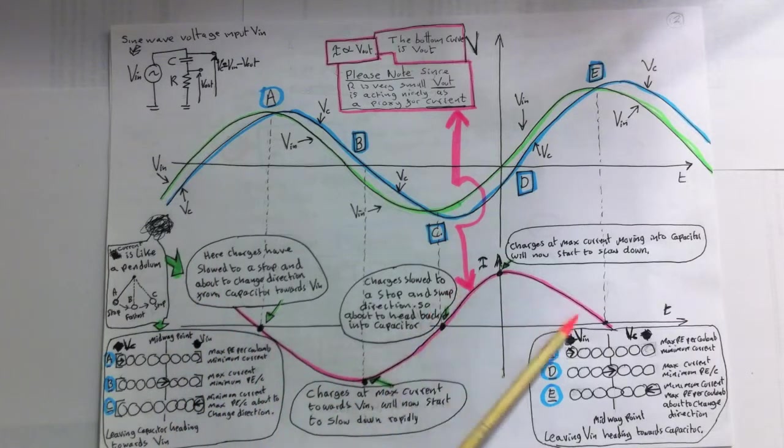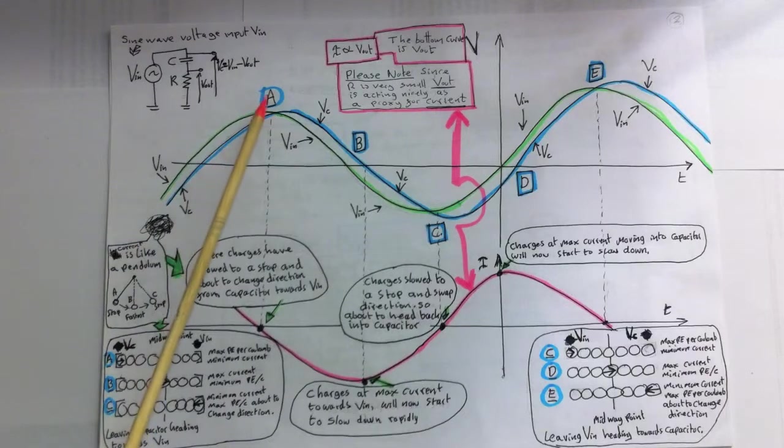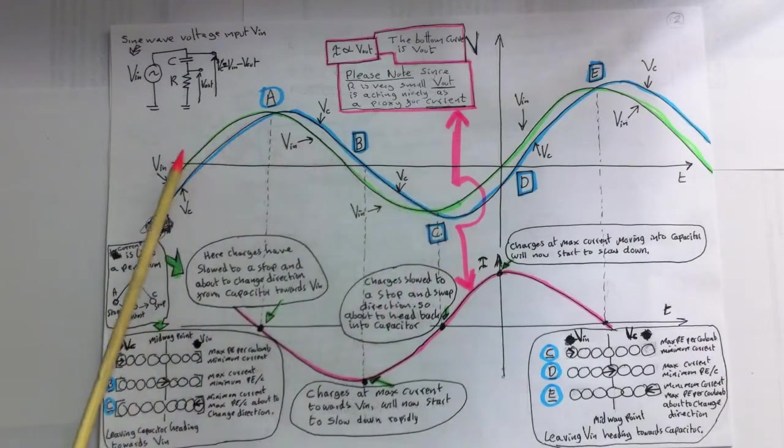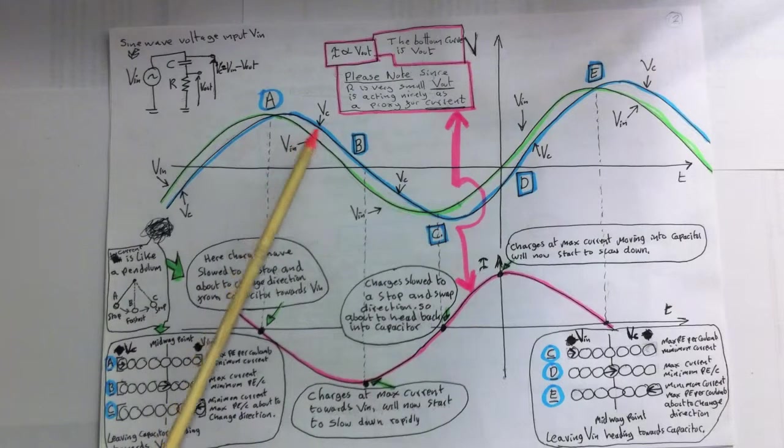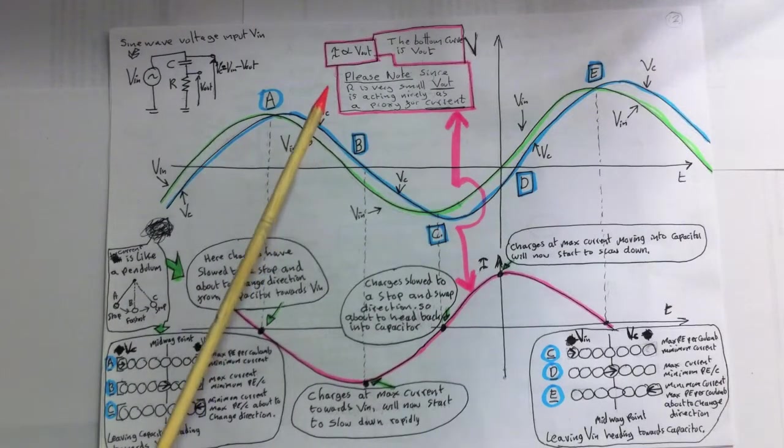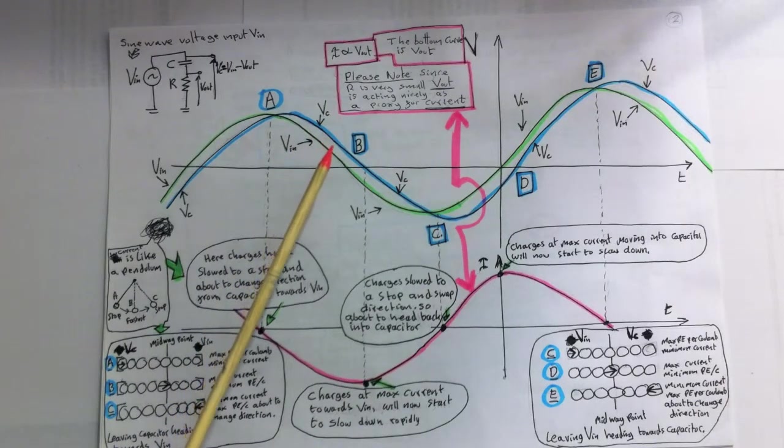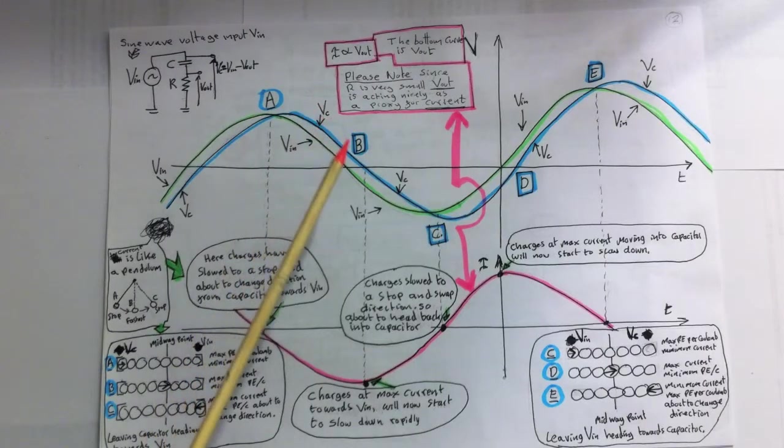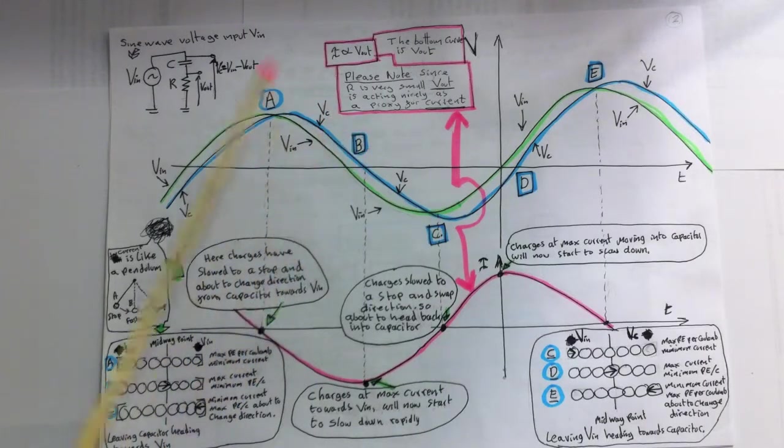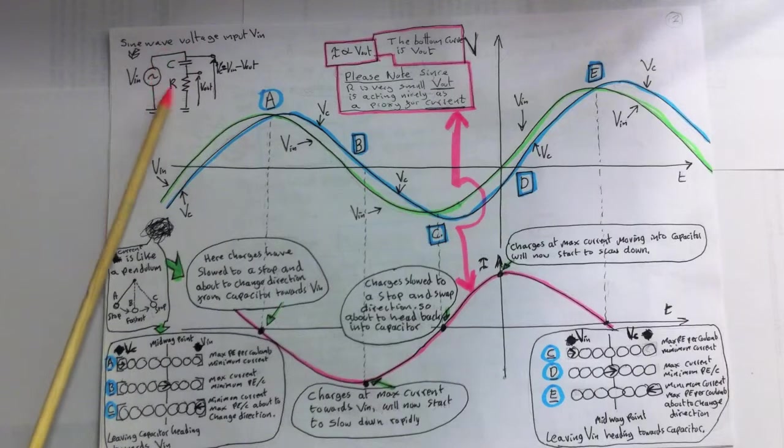So we're going to be thinking about the current here, the charge flow. At time A to C, Vin is lower, so Vin is lower than Vc. So charges will be flowing from Vc to Vin, out of the capacitor, out of the capacitor, into Vin.